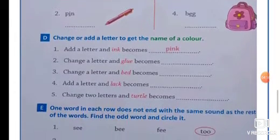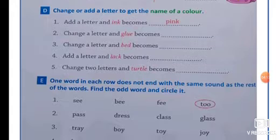The next exercise is change or add a letter to get the name of a color. Means, agar hum letter change karengi to hume aur kaunsa bhi ek word add karengi? Letter. Hume name of color melega. Add a letter and ink becomes kya ban jayega? Pink. Because hume na kaunsa letter add kia hai? P. P, I, N, K, pink. Second one. Change a letter and blue becomes blue. Blue ka spelling to hume maalum hai? B, L, U, E, blue.